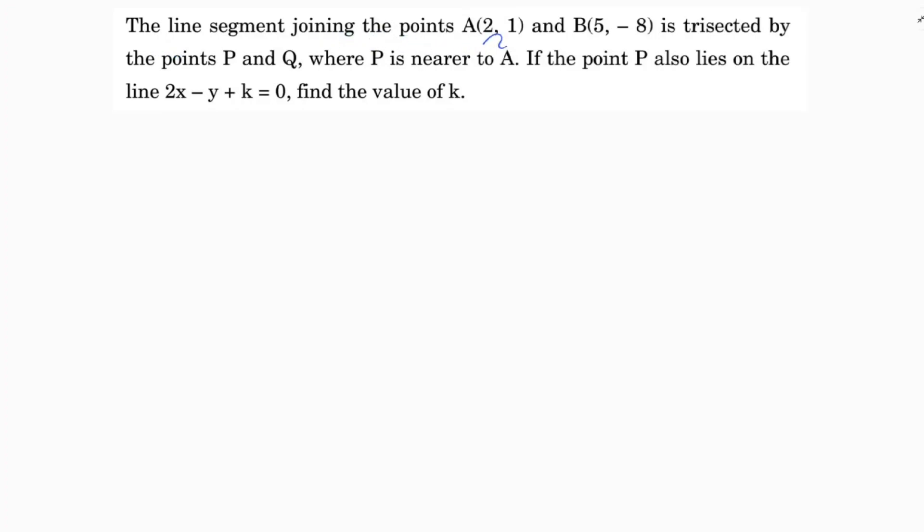The line segment joining the points A(2, 1) and B(5, -8) is trisected by the points P and Q. This is a problem based on trisection, so I'll take two points A and B.